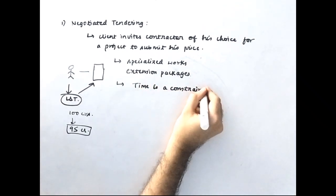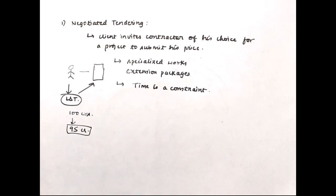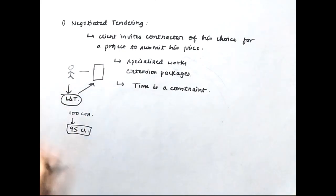This type of tendering is usually adopted when time is a constraint. The complete tendering process takes a lot of time — calling contractors, technical bidding, financial bidding, analyzing bids — it is very time-consuming. So if time is the constraint and cost is not a major concern, clients go for negotiated tendering. Usually only rich clients go for this because with only one contractor invited, there is no competition, and the contractor can quote higher rates.